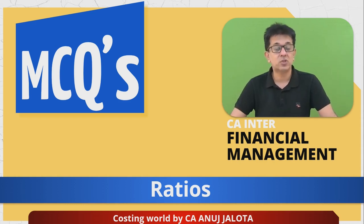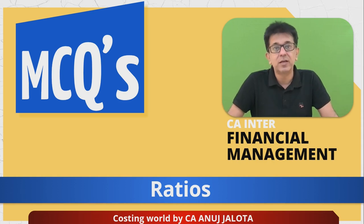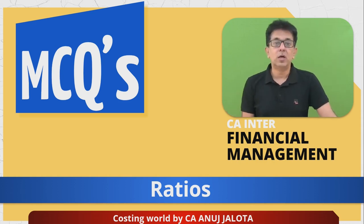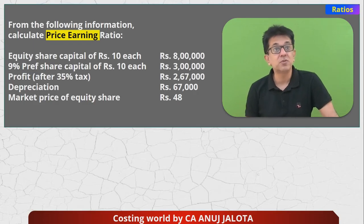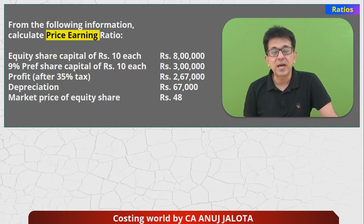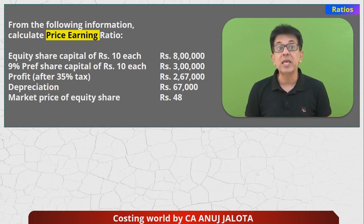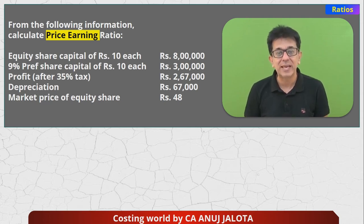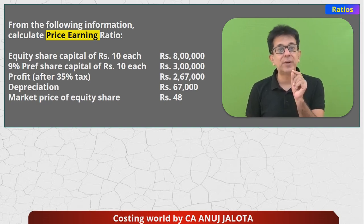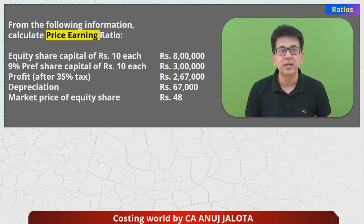So let's start doing today's MCQ — you might require a calculator for that. The question is: from the following information, calculate the price-earnings ratio. The data given is equity share capital of ₹10 each, amounting to ₹8 lakhs. So 8 lakhs divided by 10 gives us 80,000 equity shares. I'll require that.